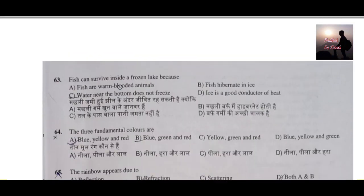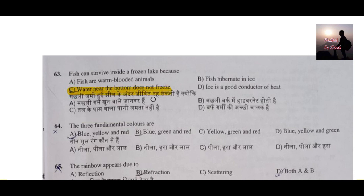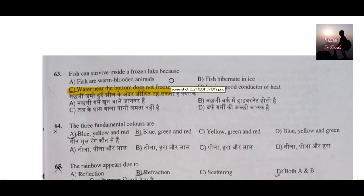Question number 63: Fish can survive inside a frozen lake because of what? The answer is: water near the bottom does not freeze. In places like Jammu and Kashmir, the upper surface of the lake forms a layer of ice, but below that the water remains in liquid state. So near the bottom of the lake, water does not freeze, and that is why fish can survive in a frozen lake.